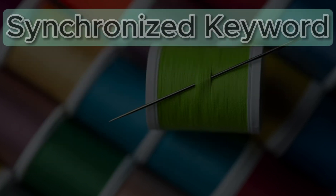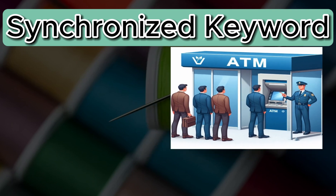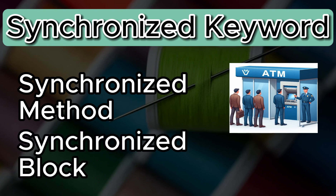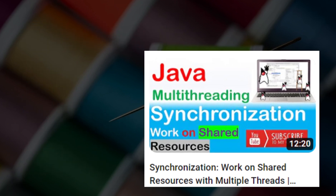First, we have synchronized methods or blocks. This is like having an ATM machine — only one person can use it at a time. Similarly, in Java we can mark a method as synchronized to ensure only one thread can access it at a given moment, or we can tag a specific code block as a synchronized block. Using synchronized methods or blocks, we can make sure our code runs smoothly in critical sections. For example, marking a bank account balance update method as synchronized ensures only one thread can modify the balance at any time, preventing all conflicts.